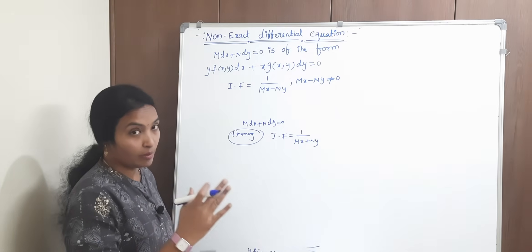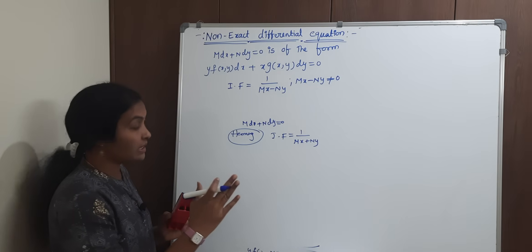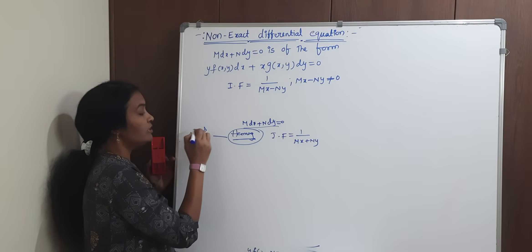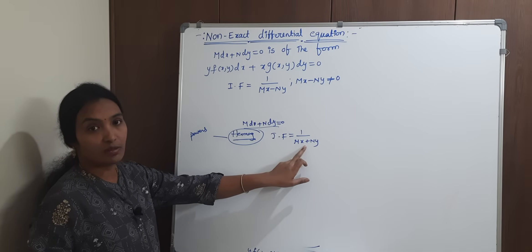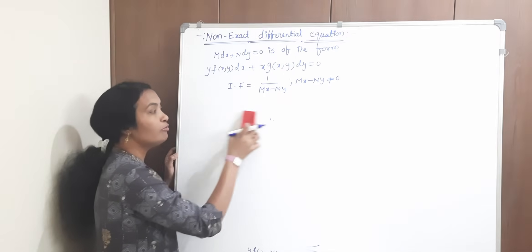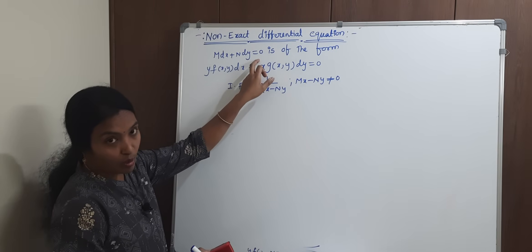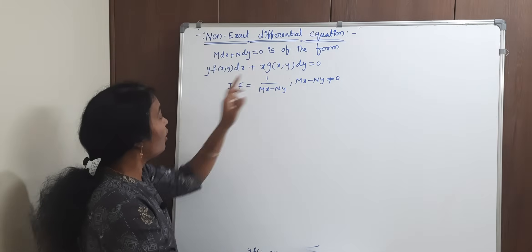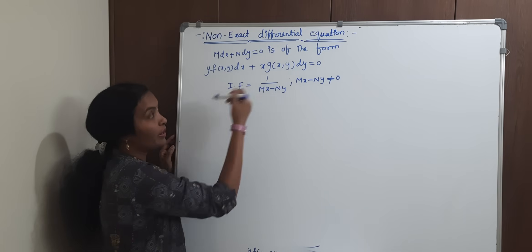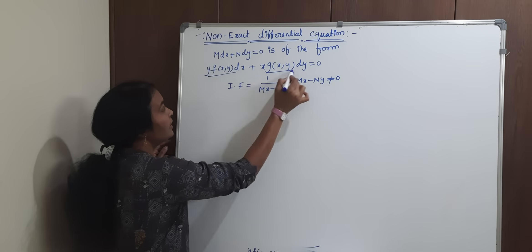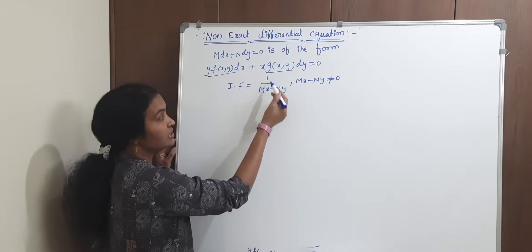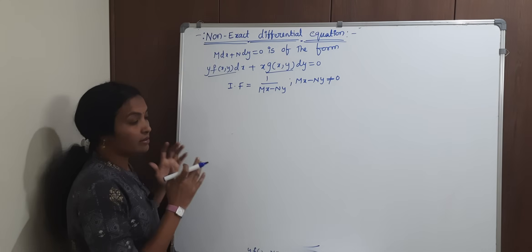What is our first integrating factor? It applies when the equation is homogeneous, meaning the powers are equal, and the integrating factor is 1 by mx plus ny. For the second method, the equation is non-exact and is in the form where y is a common factor in the first function and x is a common factor in the second function. Then the integrating factor is 1 by mx minus ny, which must not equal zero, as division by zero would be undefined. This is our second method.